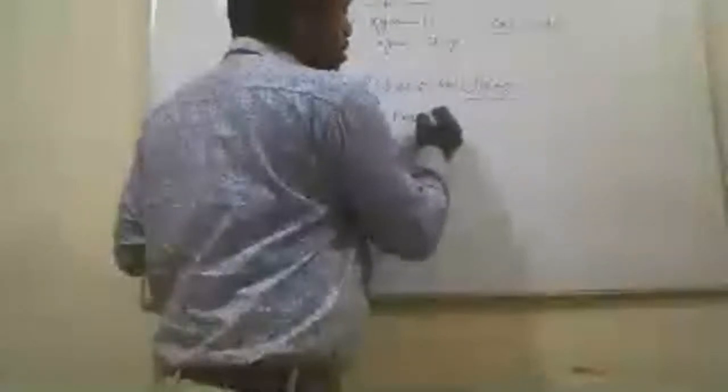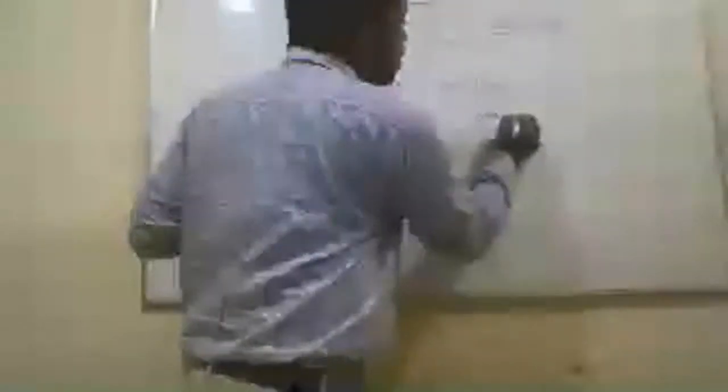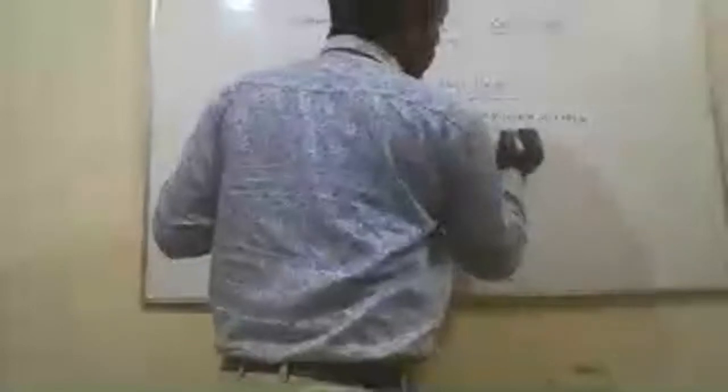After Robert Hooke, another important contribution came from Rudolf Virchow, who gave the idea of 'Omnis cellula e cellula,' meaning every cell arises from a pre-existing cell. This became a foundational concept in cell biology.